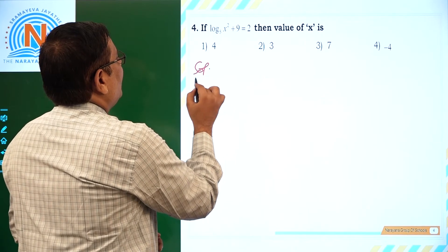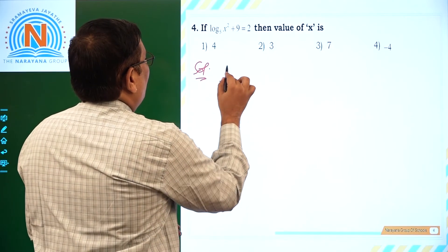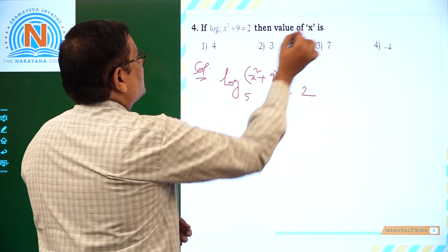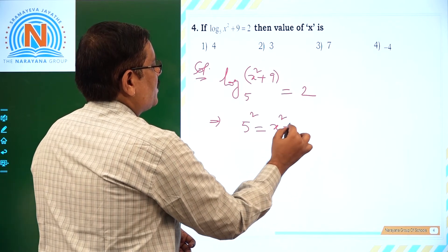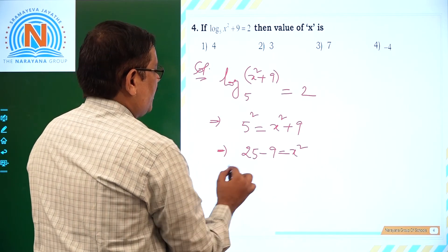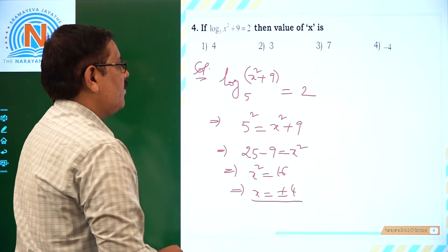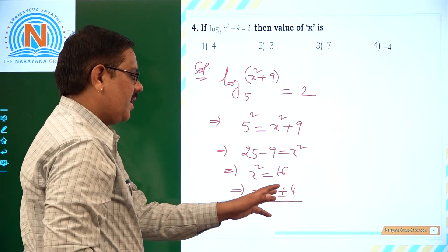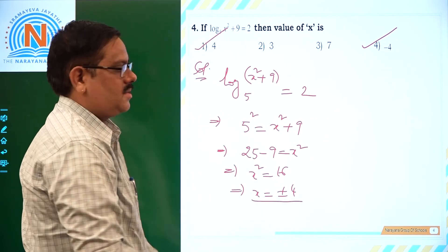Next question: if log(x² + 9) to the base 5 is equal to 2, then what is the value of x? It implies 5 squared equals x squared plus 9. That gives 25 minus 9 equals x squared, so x squared equals 16, and x is plus or minus 4. Since either minus 4 or plus 4 makes x² + 9 positive, log is defined for both. So both the first and fourth options are correct answers.